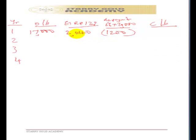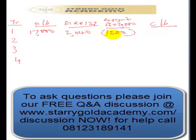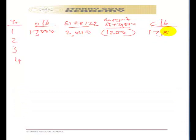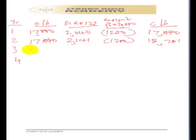The effective interest gives us $2,040, but we are only paying back $1,200 in cash. That means our closing balance for year one will be $17,840. This closing balance becomes the opening balance for year two. Applying 12% effective interest gives $2,141, and we again repay $1,200, leaving a closing balance of $18,781.